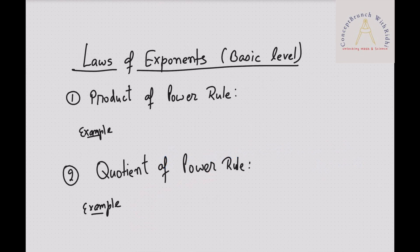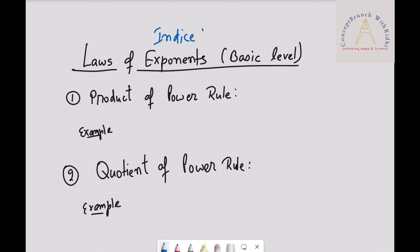The laws of exponents on the basic level: there are five types of basic rules we have to follow. So laws of exponent. In some books they write as laws of indices as well. I-N-D-I-C-E-S. So basically the term indices and the term exponent are simply different names for the same mathematical rules.